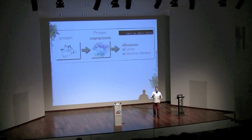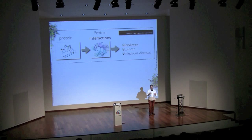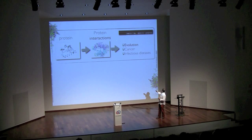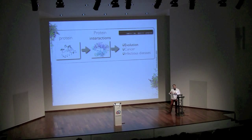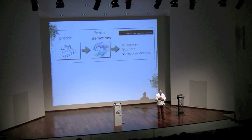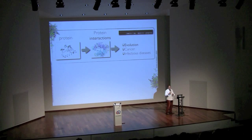What we are interested in understanding is how these molecular machines came to be the way they are, and then we try to use these evolutionary principles to understand cancer and infectious diseases. What I'd like to do today, since this is an evening about emergence, is talk about how we study emergent properties and their origin. I will give you some simple examples so you understand the logic we use to understand the principles by which proteins come to interact.